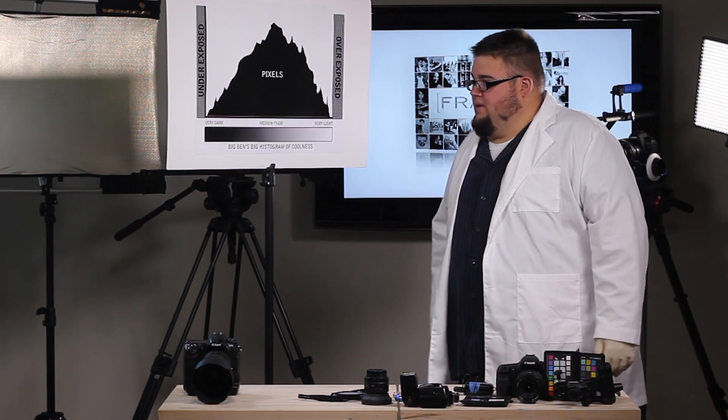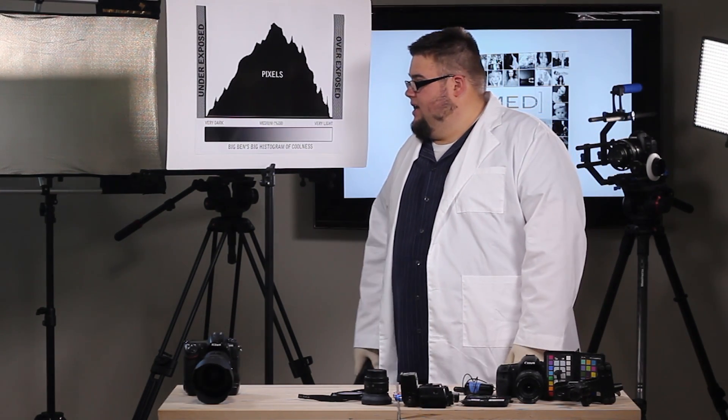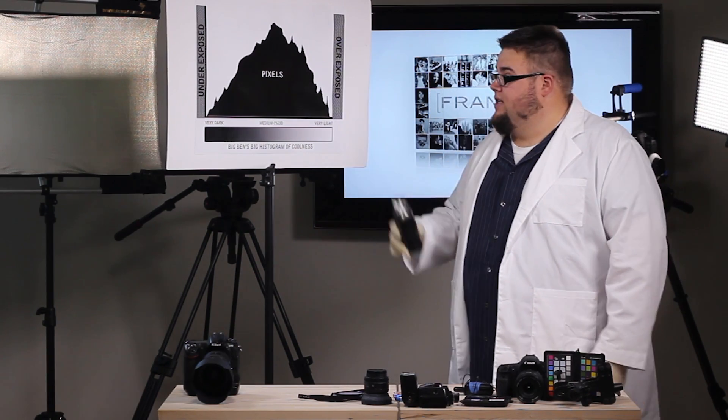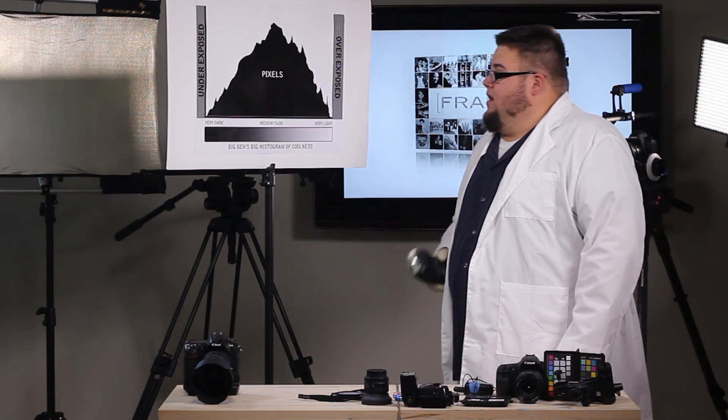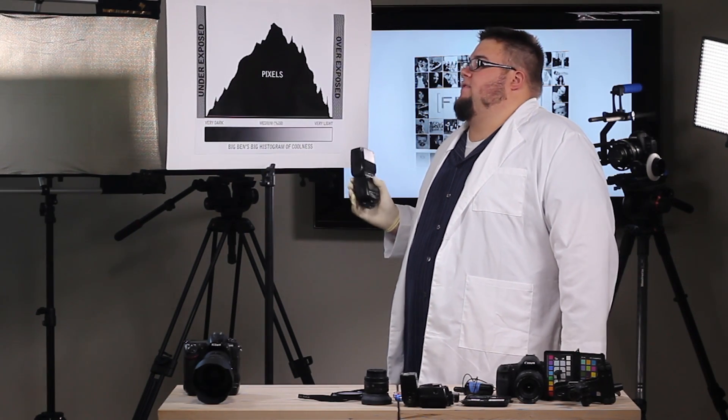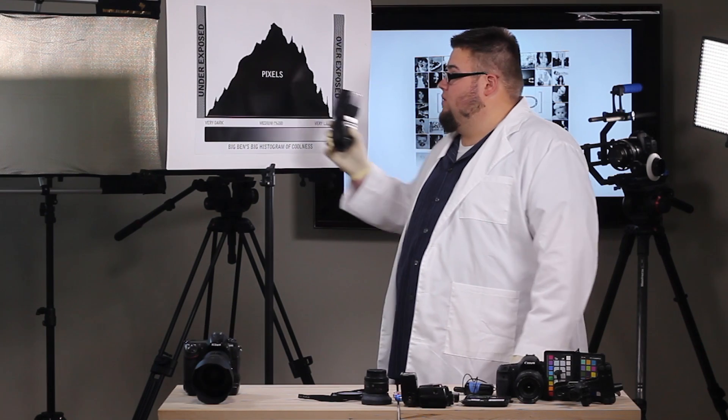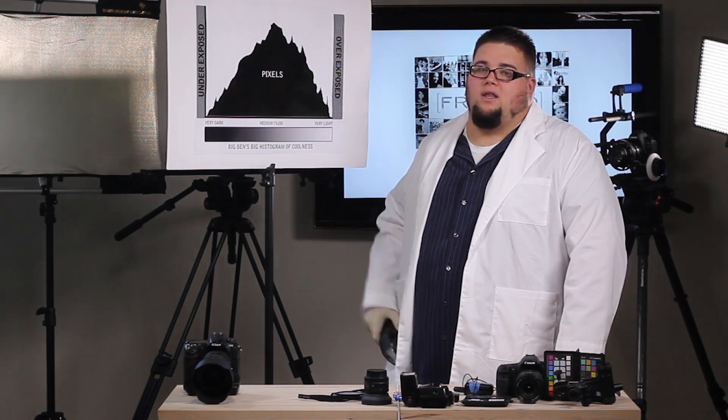A histogram, as you can see here, due to sophisticated computer technology and a box of crayons, we were able to come up with what a histogram would look like today. And basically all a histogram is, is a bar graph going from left to right, up and down. Remember those bar graphs you learned in school? This is one of those.